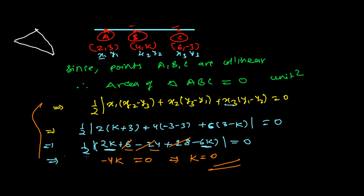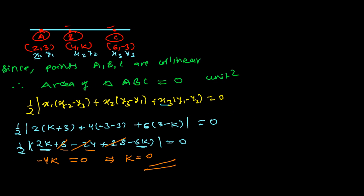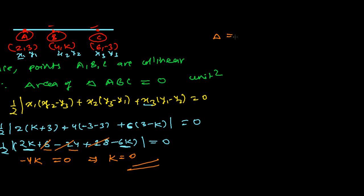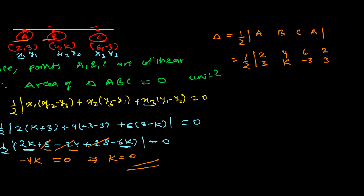If you find the formula method difficult, there is a shortcut to find the area. What we do is write all the points A, B, C in a column and repeat point A at the end — so we write (2,3), then (4,k), then (6,−3), then repeat (2,3). The area is one-half times the difference of diagonal products. Going southeast: 2 times k = 2k, plus 4 times (−3) = −12, plus 6 times 3 = 18.